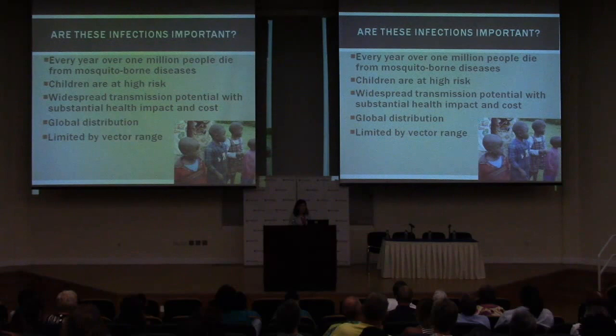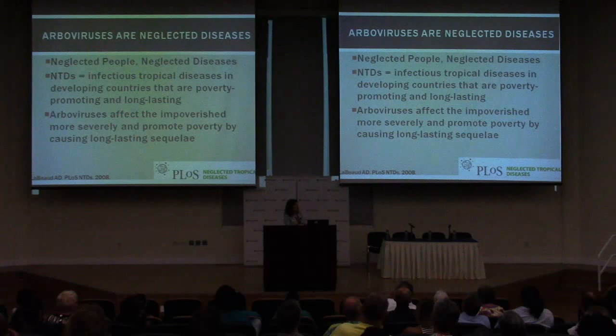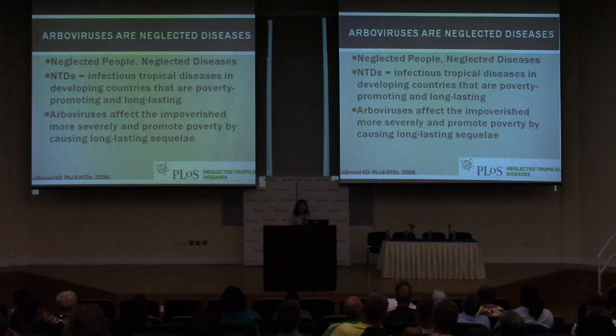I like to point out that arboviruses are actually neglected diseases. The neglected tropical diseases are a group of tropical infectious diseases that occur in both developing and developed nations — they are poverty-promoting and long-lasting. Arboviruses in particular can infect impoverished populations more severely and actually promote poverty through long-standing health consequences we'll discuss this evening.